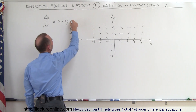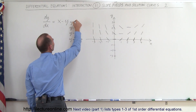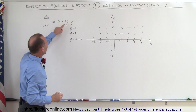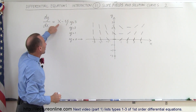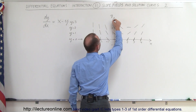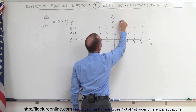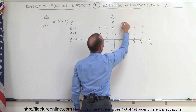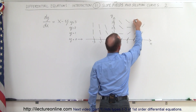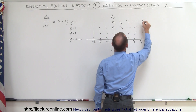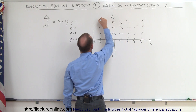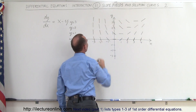Now we go to the line y equals 3, so we subtract 3 from every value of x. When x is 0 the slope is negative 3, then negative 2, negative 1, 0, and 1. Of course here it gets steeper and steeper.